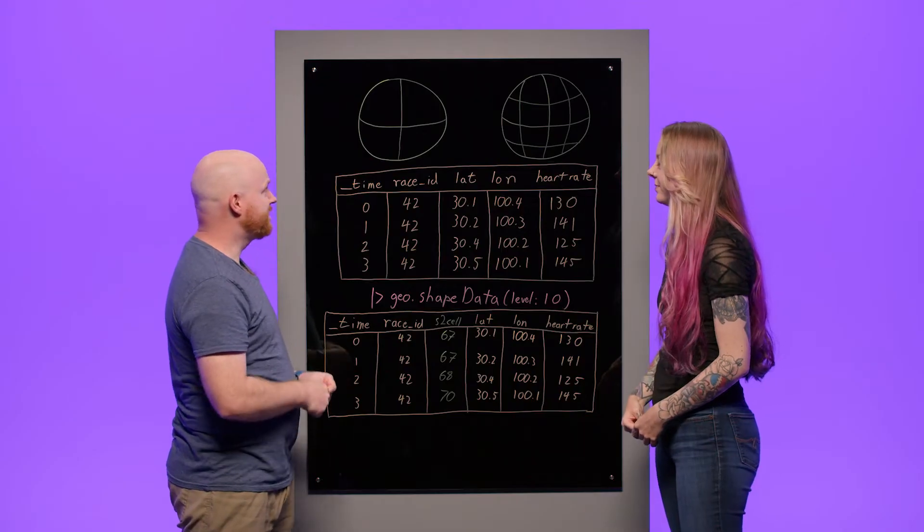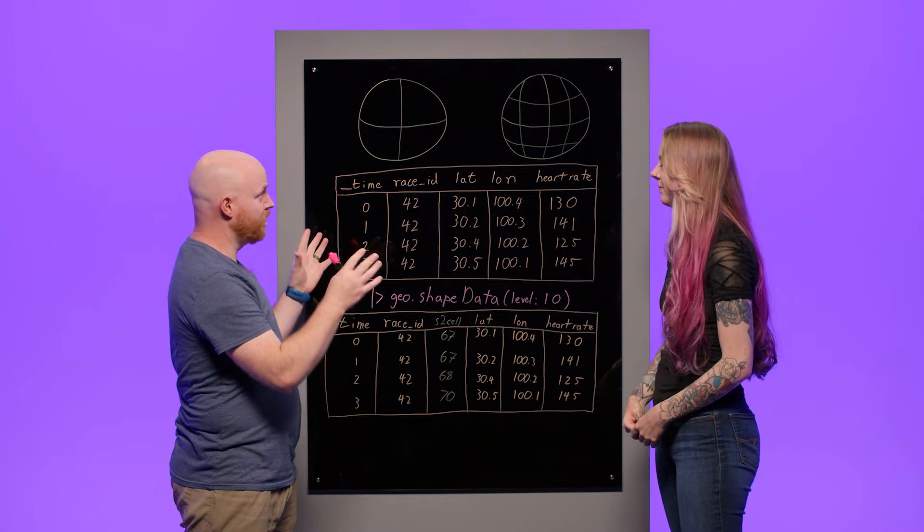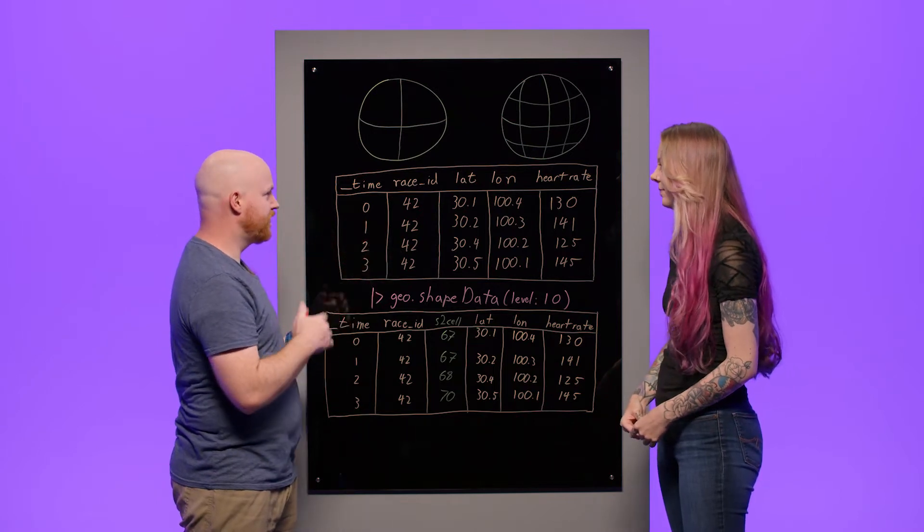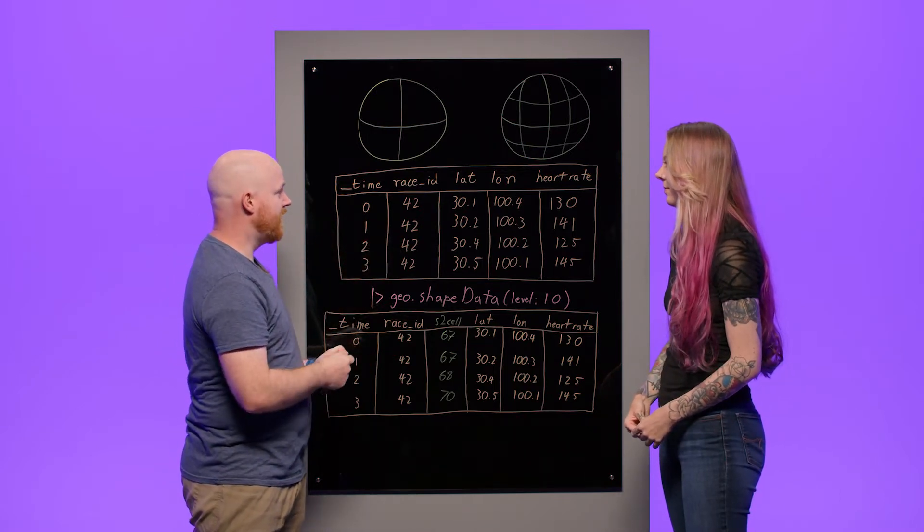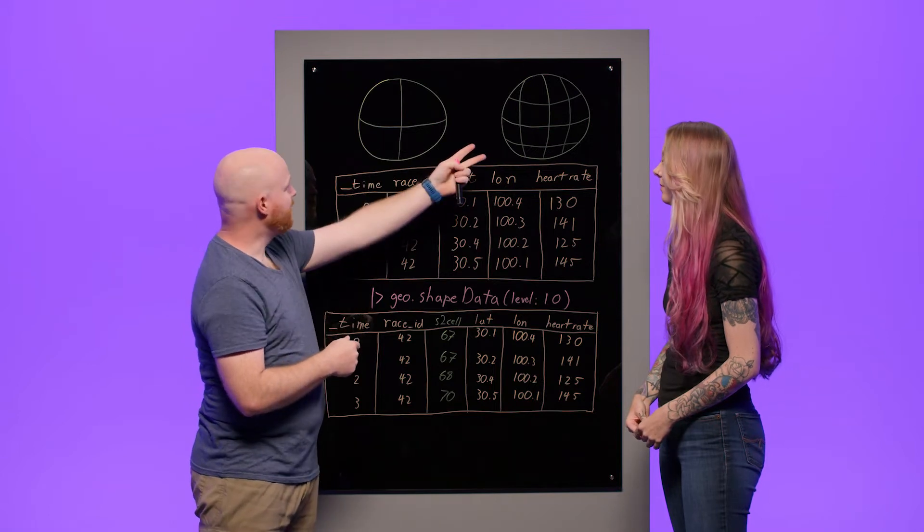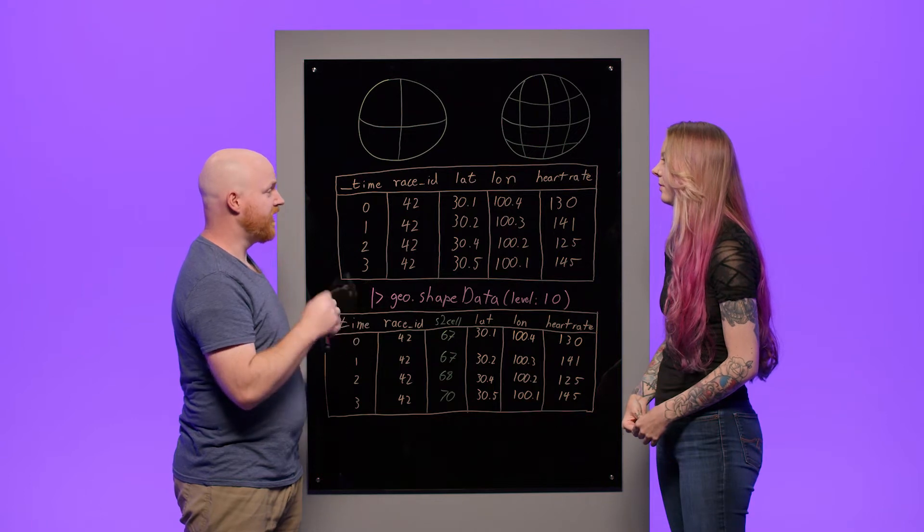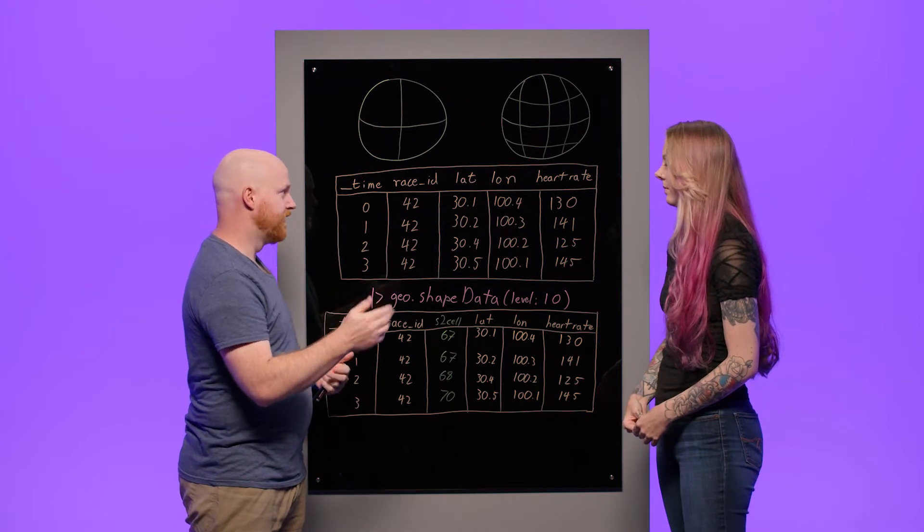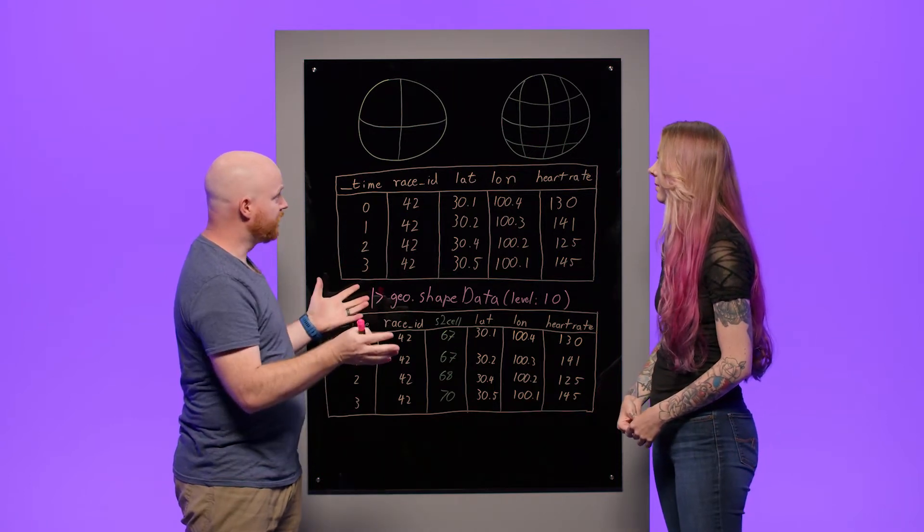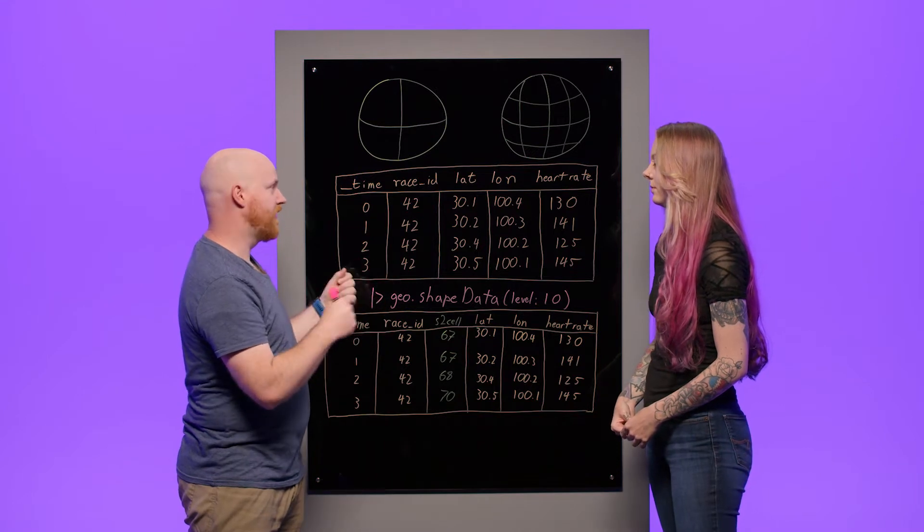Yeah, S2 geometry is a system for breaking the globe or the Earth down into cells so you can determine where things are. So you may have a few cells like this or many cells. And the idea is if you know that two things are in the same cell, you know they're kind of close to each other. Two things are not in the same cell, then you know they're kind of far apart. And this way you can kind of map the whole world and track where things are and where they aren't.